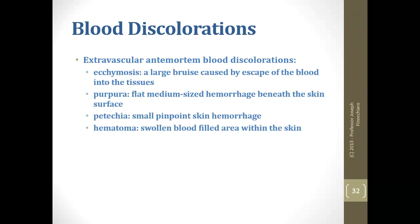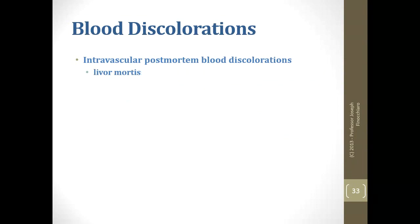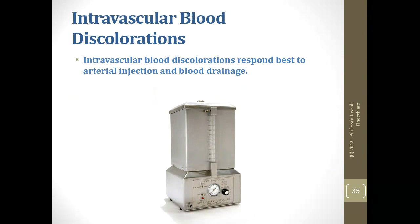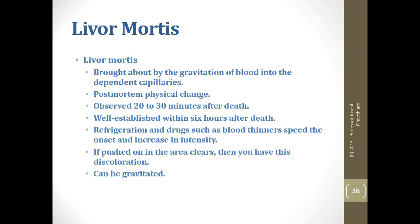Extravascular ante-mortem blood discolorations include bruises or ecchymosis, purpura, petechiae, and hematoma. Livor mortis is our intravascular post-mortem blood discoloration — if it's in there, it's livor mortis. Remember that it becomes extravascular given time. Post-mortem stain and Tardieu spots are also extravascular post-mortem. Intravascular blood discolorations are cleared by injection; extravascular ones are not.